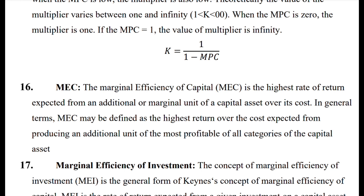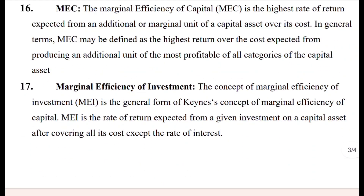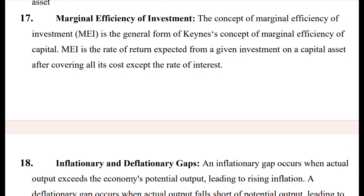Marginal efficiency of capital (MEC) is the highest rate of return expected from an additional or marginal unit of a capital asset. In general, MEC may be defined as the highest return over the cost expected from producing an additional unit of the most profitable category of capital asset. Marginal efficiency of investment (MEI) is the general form of MEC — it is the rate of return expected from a given investment after covering all its costs, compared to the rate of interest.